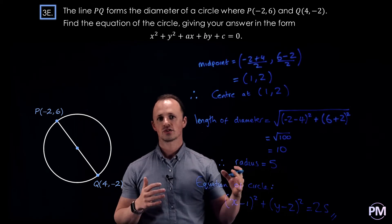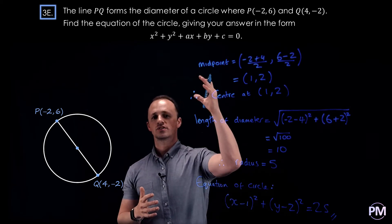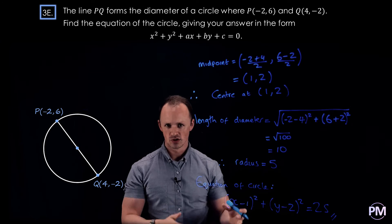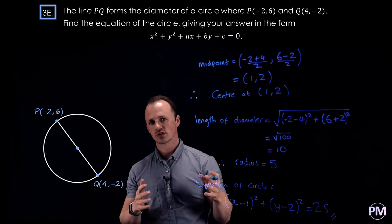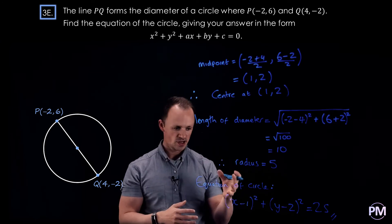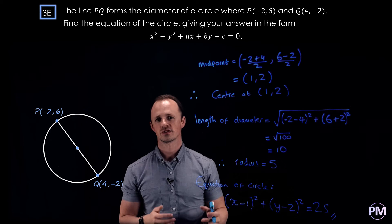So just to recap: if we're given two coordinates on the diameter of a circle, we can use those coordinates to find the centre and radius, and then put those values into the equation for the circle.